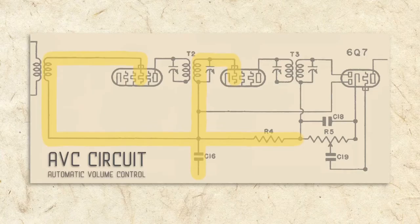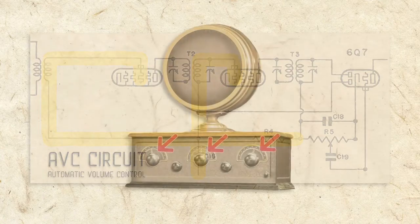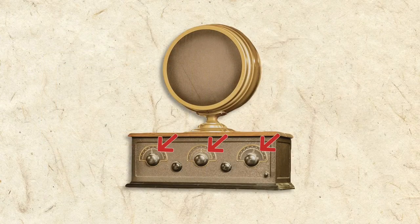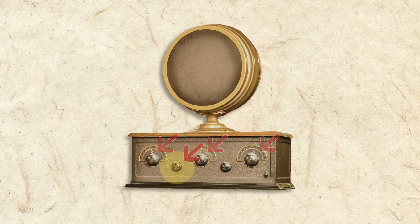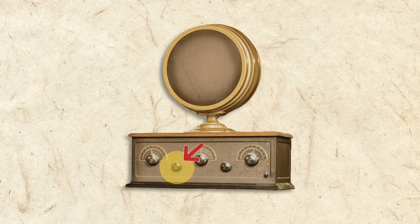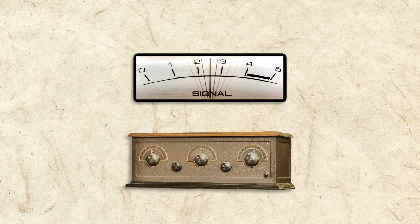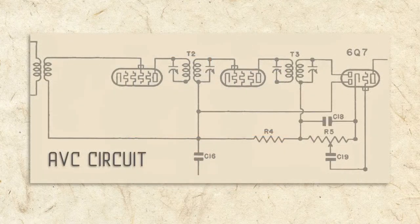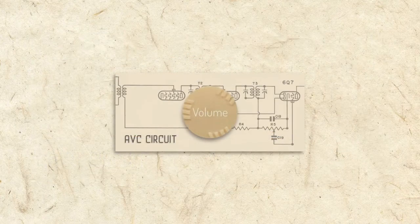Now let's look at the AVC section of the circuit, which stands for Automatic Volume Control. As we've learned, early radios required lots of adjustment to tune, but the volume control also required constant adjustment to compensate for constantly changing radio signal strengths. AVC is an ingenious design that does this volume compensation for you.